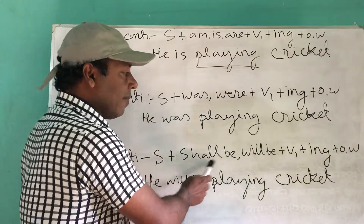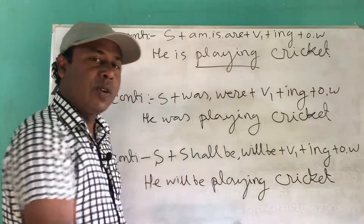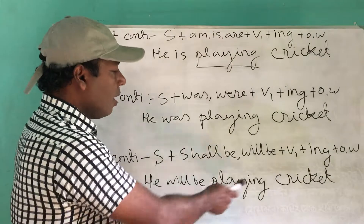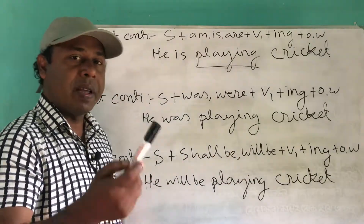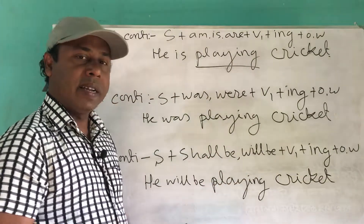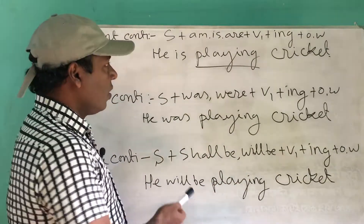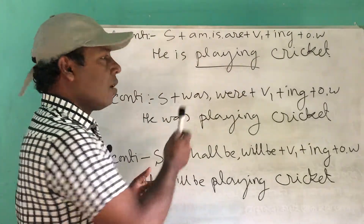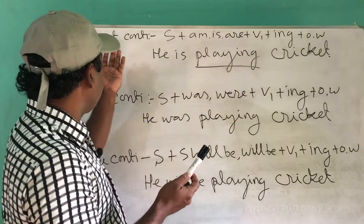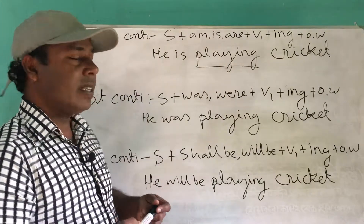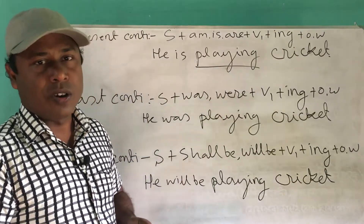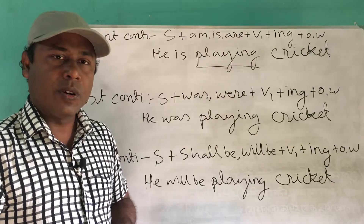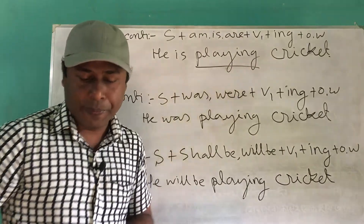Future continuous: present participle word with shall be/will be. For example, 'He will be playing cricket, I will be playing cricket, they will be playing cricket.' So now we know how to make present continuous, past continuous, and future continuous tense. Thanks for watching everybody. Assalamu Alaikum.